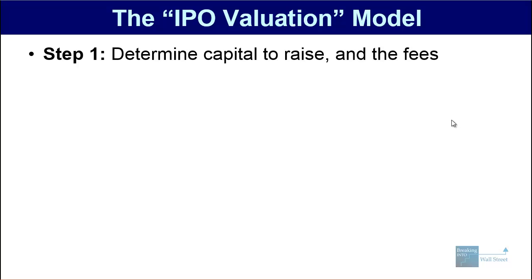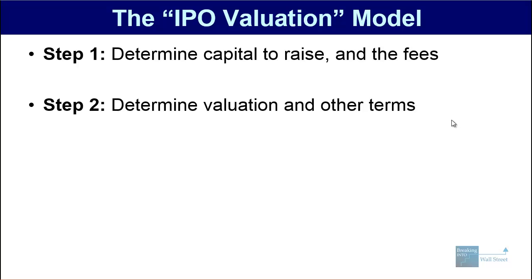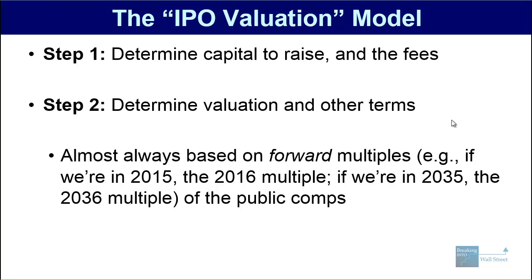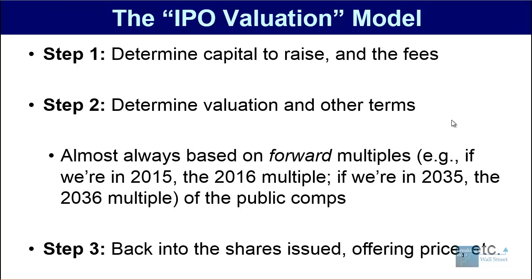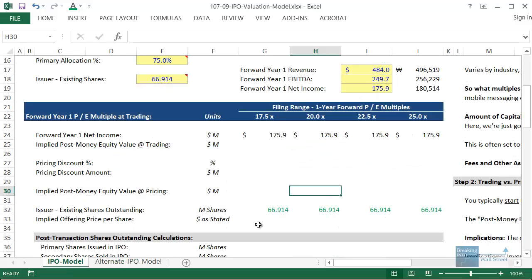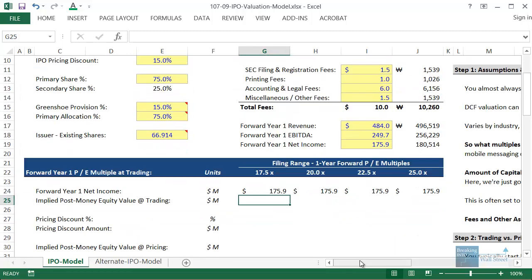With this type of model, step number one is to determine the capital to raise and the fees. Then you figure out the valuation and other terms. Those valuation multiples are typically based on forward multiples — so if we're in 2015, we'd use the forward 2016 estimated multiple. We'd look at the public company comparables and say the median P/E multiple for next year is 20x, the minimum is 15x, the maximum is 25x, so we're probably going to price our company somewhere in that range. Once you have that, you can use these numbers to back into the number of shares issued, the offering price, and other key metrics. Let's jump back into Excel now and go through how all the math works.